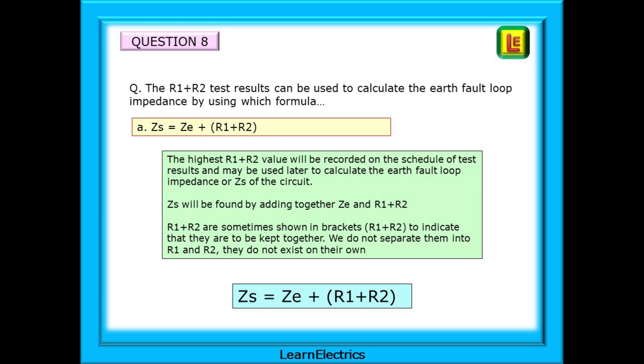R1 plus R2 are sometimes shown in brackets to indicate that they are to be kept together. We do not separate them into R1 and R2. They do not exist on their own.